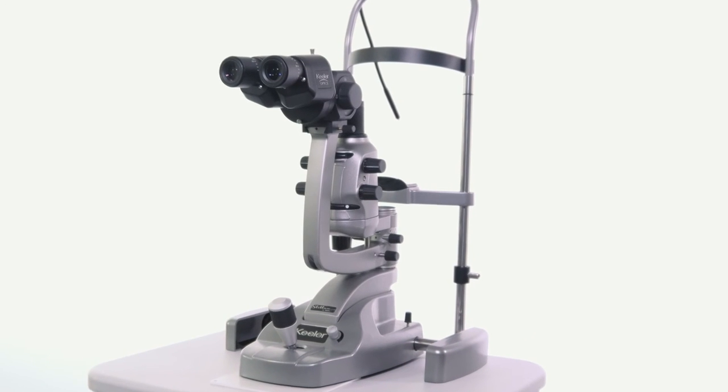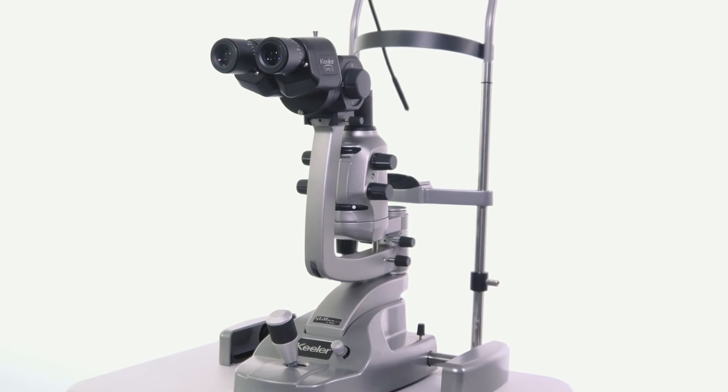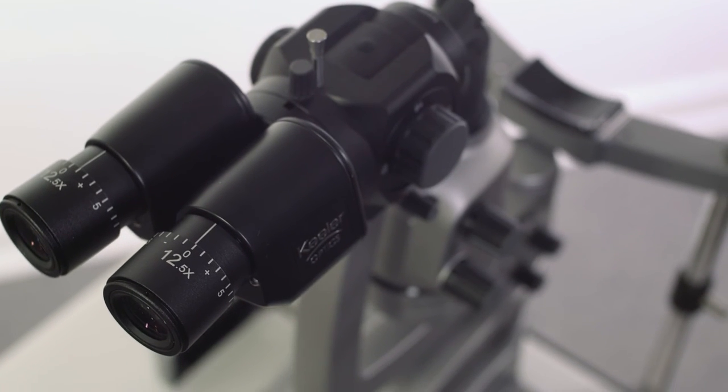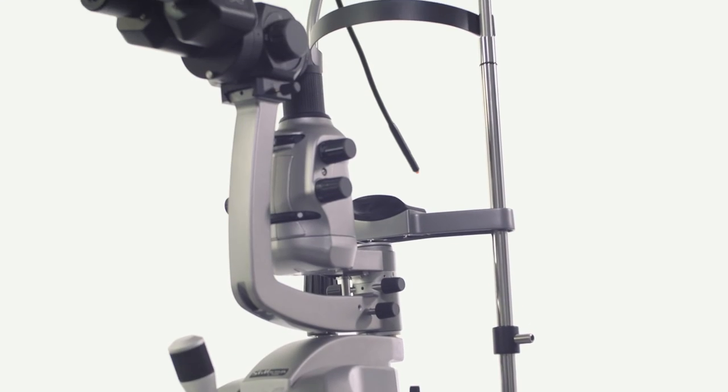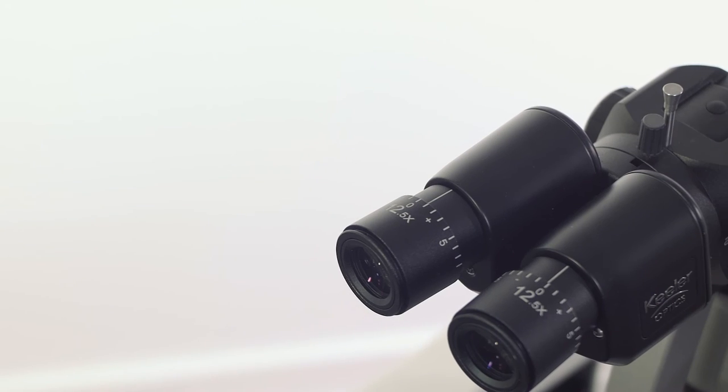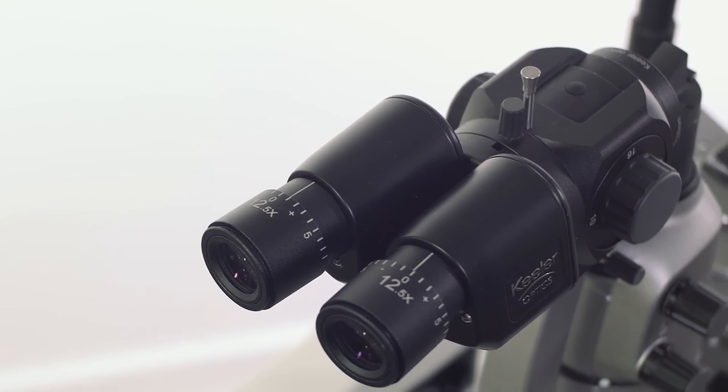The Keeler Z-series is our lower illumination compact slit lamp. It features a full range of Keeler exceptional optics. This product also comes in a digital ready form that offers the same features but can seamlessly be upgraded to a full digital system.